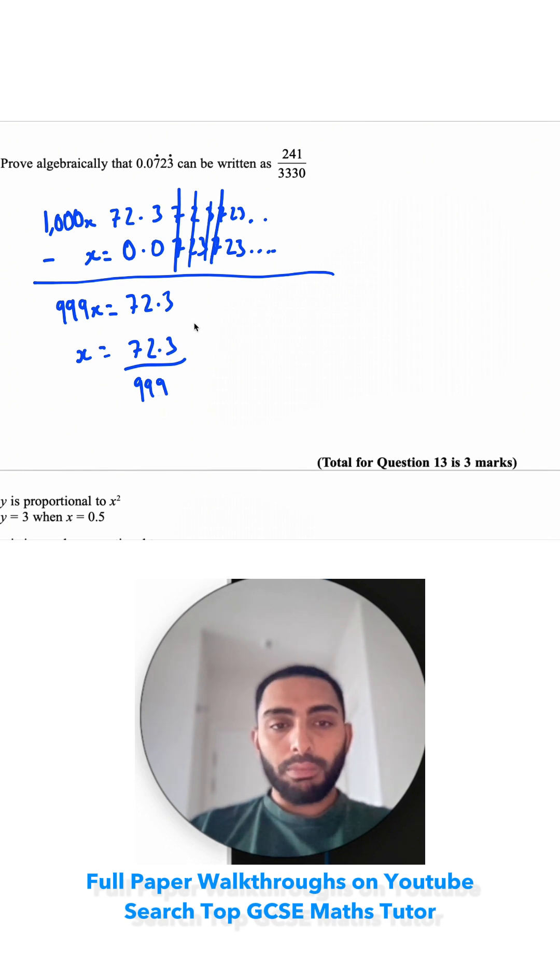So I'm going to get rid of this decimal by multiplying by 10 on the top and 10 on the bottom. So it becomes 723 over 9,990.